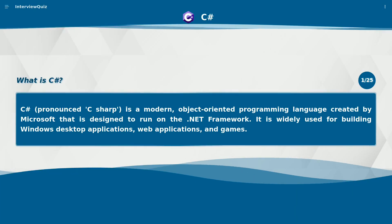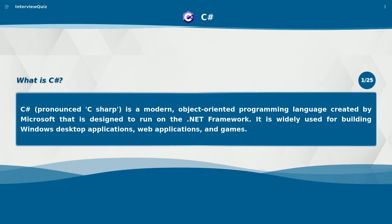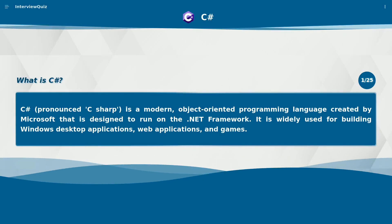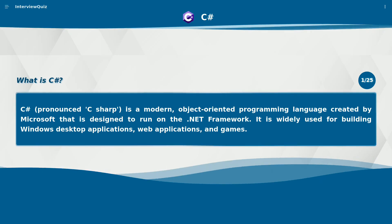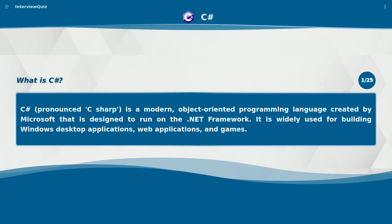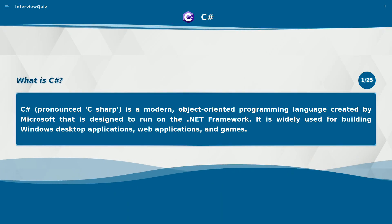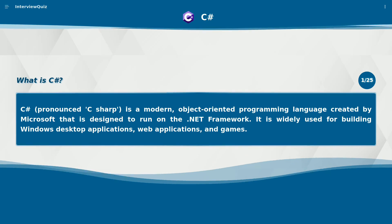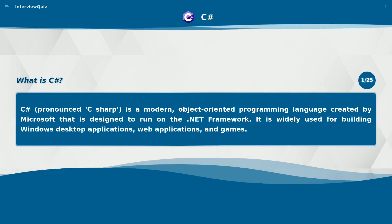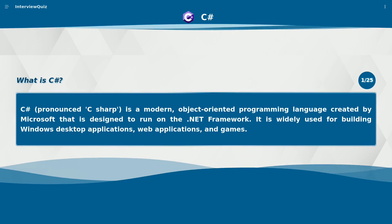What is C#? C#, pronounced C-Sharp, is a modern, object-oriented programming language created by Microsoft that is designed to run on the .NET Framework. It is widely used for building Windows desktop applications, web applications, and games.